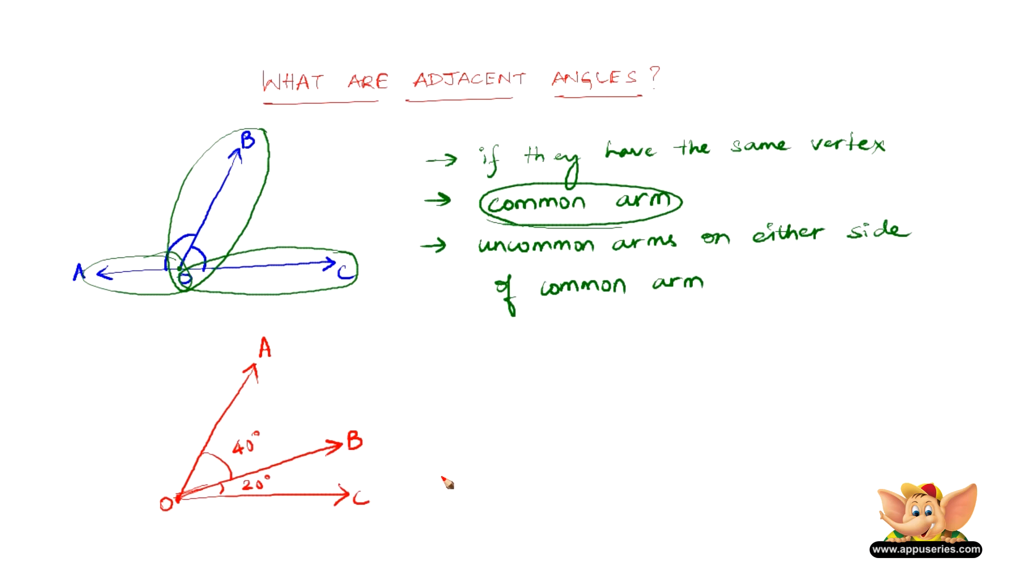So now, angle A, O, B and angle B, O, C are adjacent angles because they share a common arm and they have the same vertex, the two angles, and then they also have the uncommon arms in O, A and O, C which do not figure in the other angles.